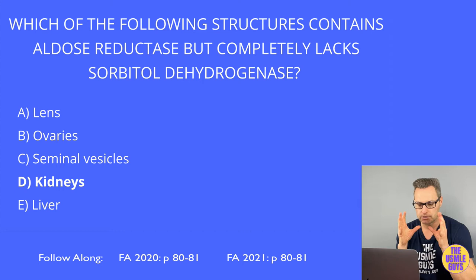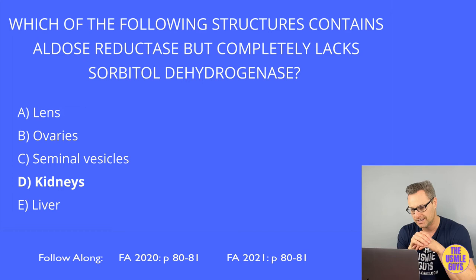The retina, the kidneys, and the Schwann cells have aldose reductase but lack sorbitol dehydrogenase, while the lens has primarily aldose reductase. Some structures, like the liver, the ovaries, and the seminal vesicles, have both enzymes.